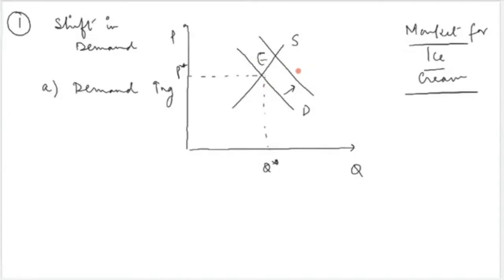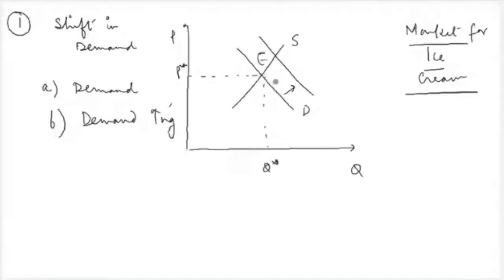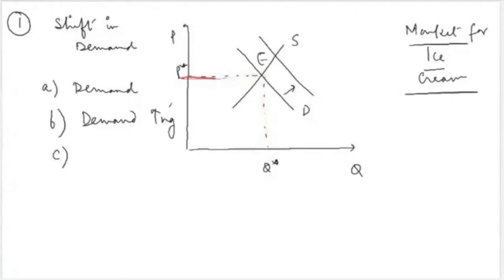Now that the demand curve has shifted rightwards, the second part is to identify the direction of change — demand is increasing. For the third part, we understand the new equilibrium. At the old equilibrium price, if prices do not change, there will be a scenario of excess demand. The quantity demanded exceeds the quantity supplied at price P*, creating a problem of shortage in the market.